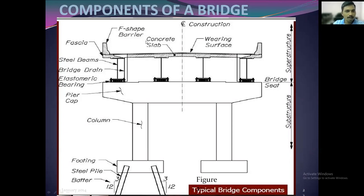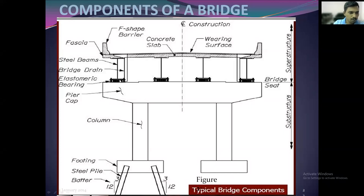Then there is the concrete slab, fascia, and steel beams or girders. This is the bridge drain and elastomeric bearings — whatever load is coming from the top surface of the bridge can be transmitted on the pier cap through the bearings. The part below a certain line is the substructure and the above part is the superstructure.